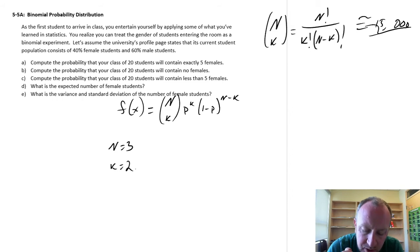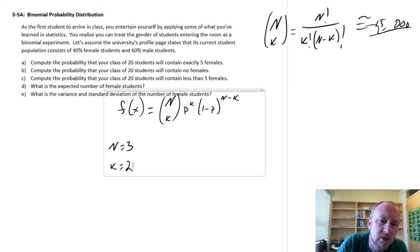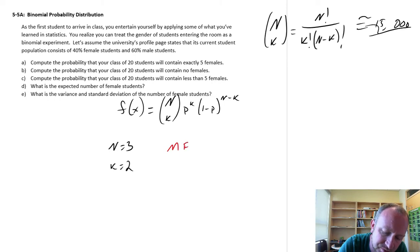So what this means, let's look at first how many different ways or how many different combinations are there of two successes out of three?